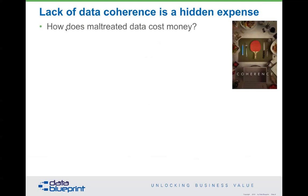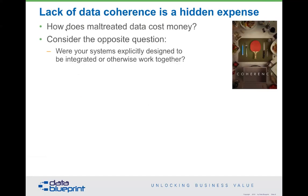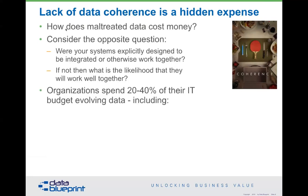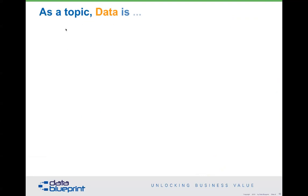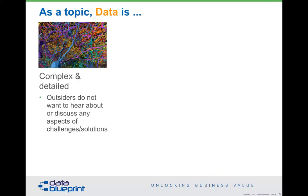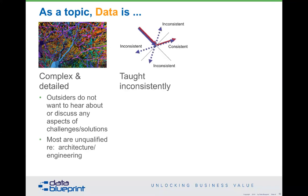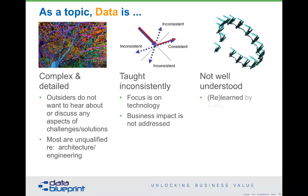The lack of data coherence is a hidden expense. Badly treated data costs organizations money. If your systems were not designed explicitly to work together, the chances that they will just happen to do so is nil — because data is the level at which they must be designed to work together. Organizations are spending 20% to 40% of their IT budget evolving data by migrating it, converting it, or improving it. Data is complex and detailed, and most people outside this field are unqualified — they don't have the requisite architecture and engineering backgrounds.